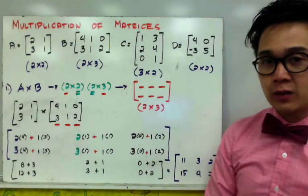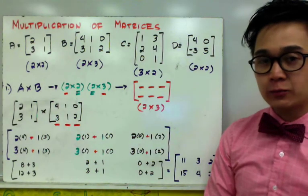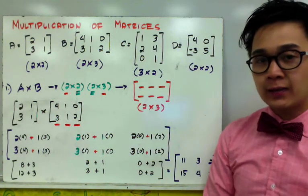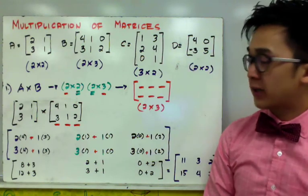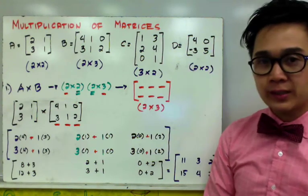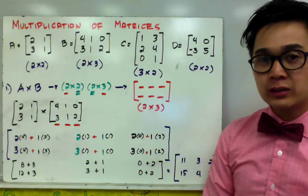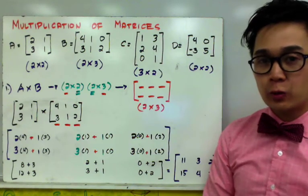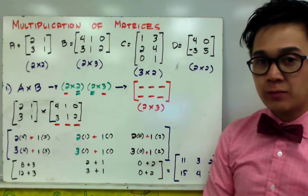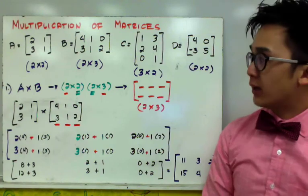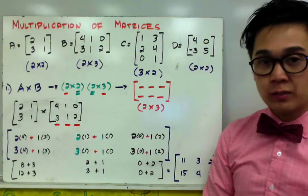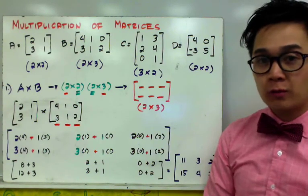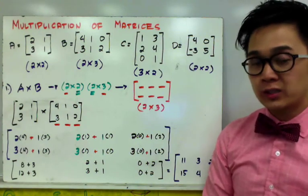In this lesson, we know that adding, subtracting, and scalar multiplying of our matrices is pretty simple. You just need to know that the order of each of the matrices is the same as the other matrix to be able to perform those operations.